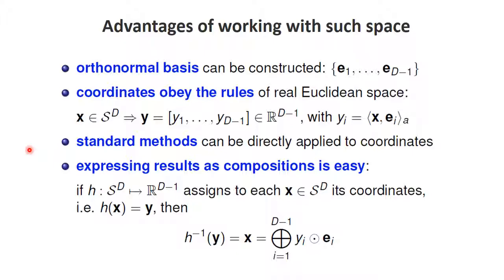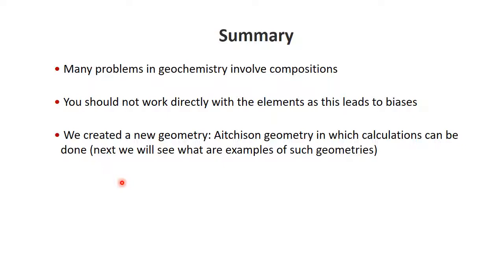In summary, many problems in geochemistry and elsewhere involve compositions. If you just work with the parts by themselves, you encounter the closure problem, where there is a natural negative bias in correlations. We cannot work with the parts themselves but must use other functions—log ratio functions are the primary example, to be developed in the next section. By doing this properly we create a new geometry, the Aitchison geometry on the simplex, with its own norm, distance, and inner product, within which we can perform proper calculations.